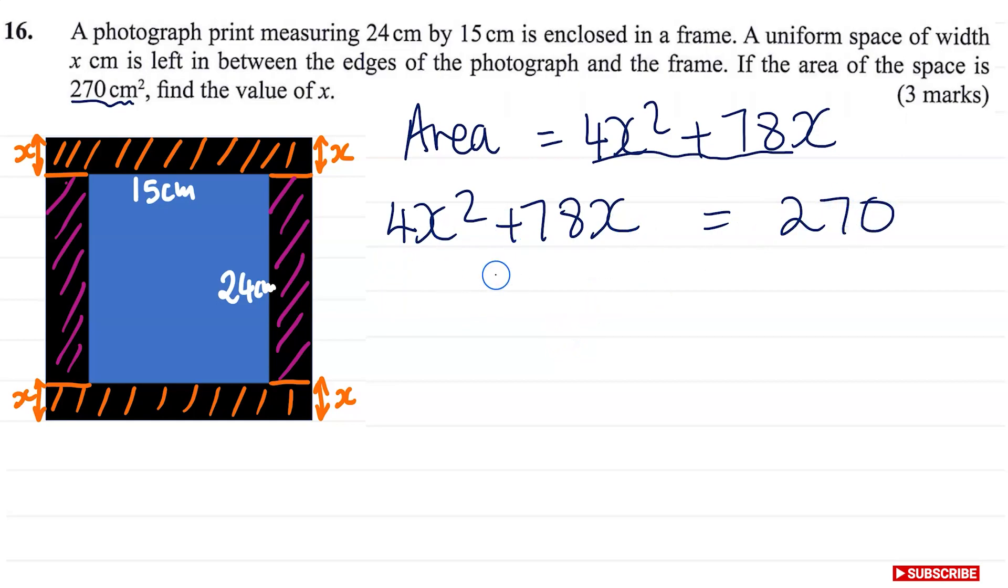We can see we have a quadratic equation here, which means we need to rearrange and have a zero on one side. So we're going to subtract 270. This is going to give us 4x² plus 78x minus 270 equal to zero.